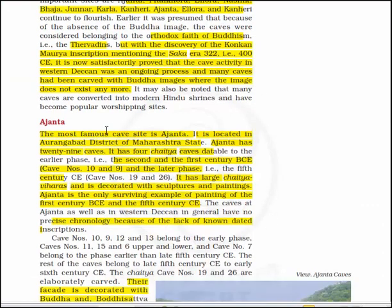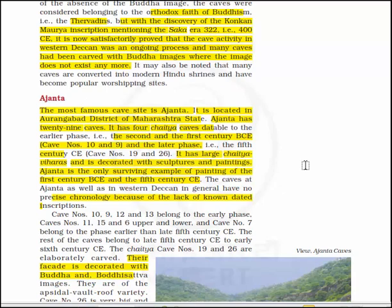The most famous cave site is Ajanta, located in the Aurangabad district of Maharashtra. Ajanta has 29 caves. It has 4 Chaitya caves datable to the earlier periods: the 2nd and 1st century BCE (cave numbers 10 and 9), and later periods — 1st century CE (cave numbers 19 and 26). It has large Chaitya-Viharas and is decorated with sculptures and paintings. Ajanta is the only surviving example of painting from the 1st century BCE to the 5th century CE.